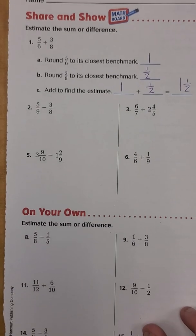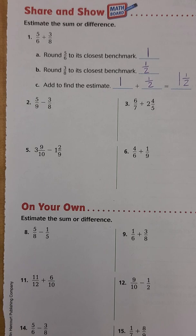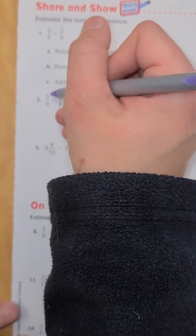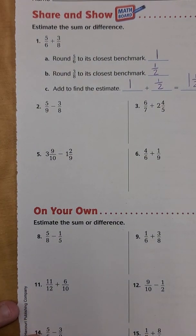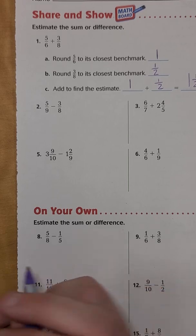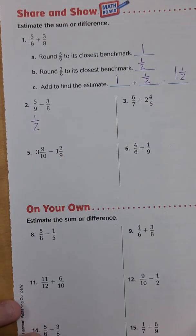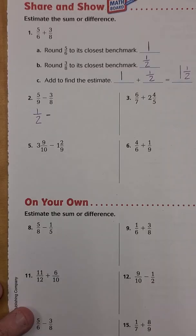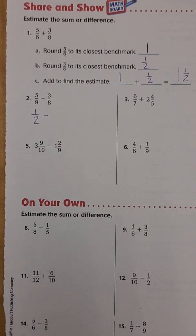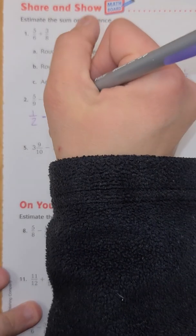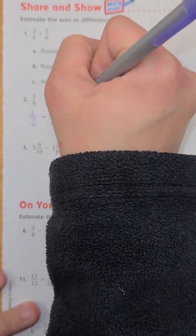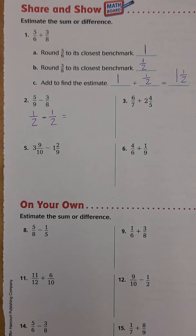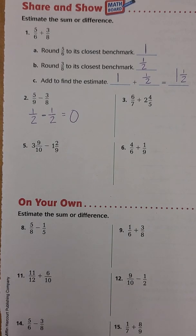Now number 2: 5/9 minus 3/8. For 5/9 — 5 is about half of 9, so I can round that to 1/2. For 3/8 — 3 is close to being half of 8, so we round that to 1/2 as well. So 1/2 minus 1/2 equals 0. That's our estimated amount.